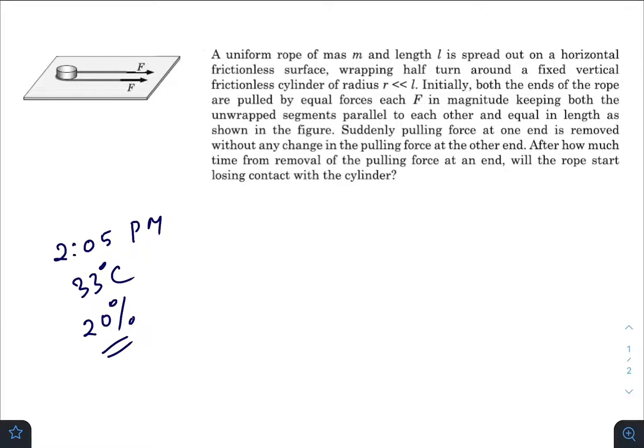Just before solving this one, let me read out the question. A uniform rope of mass m and length L is spread out on a horizontal frictionless surface, wrapping half a turn around a fixed vertical frictionless cylinder with radius r much less than L. Initially, both ends of the rope are pulled by equal forces F, keeping both unwrapped segments parallel to each other and equal in length. Suddenly, the pulling force at one end is removed without any change in pulling at the other end. After how much time from removal of the pulling force at an end will the rope start losing contact with the cylinder?